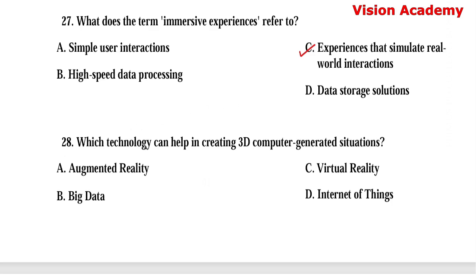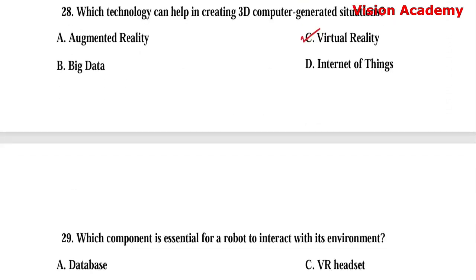Question number 28. Which technology can help in creating 3D computer-generated situations? Option A: Augmented reality. Option B: Big data. Option C: Virtual reality. Option D: Internet of things. Here, option C, virtual reality, is the right answer.